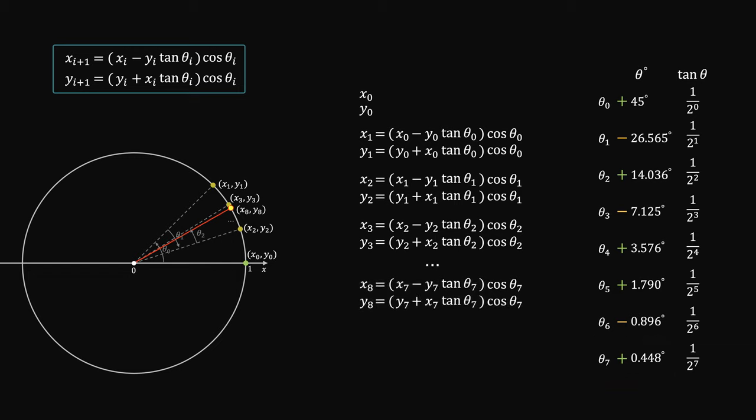During each step, the calculation involves two multiplications. The first one is easy, because you just shift it to the right by one bit. But what about the second one? These cosine multiplications.